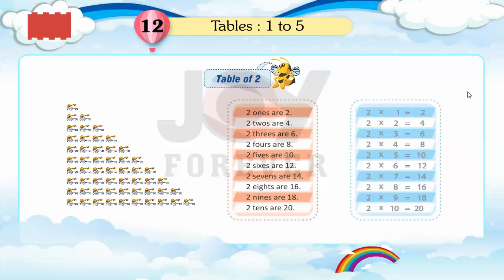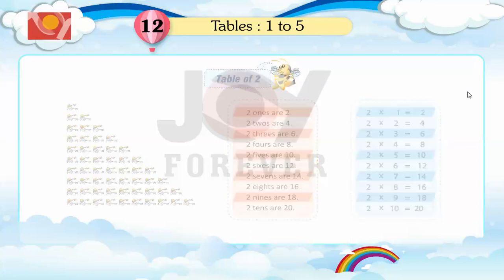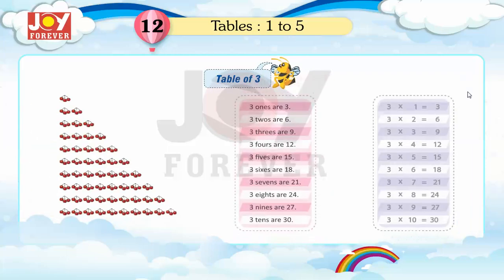2 eights are 16, 2 nines are 18, 2 tens are 20. Table of 3: 3 ones are 3.